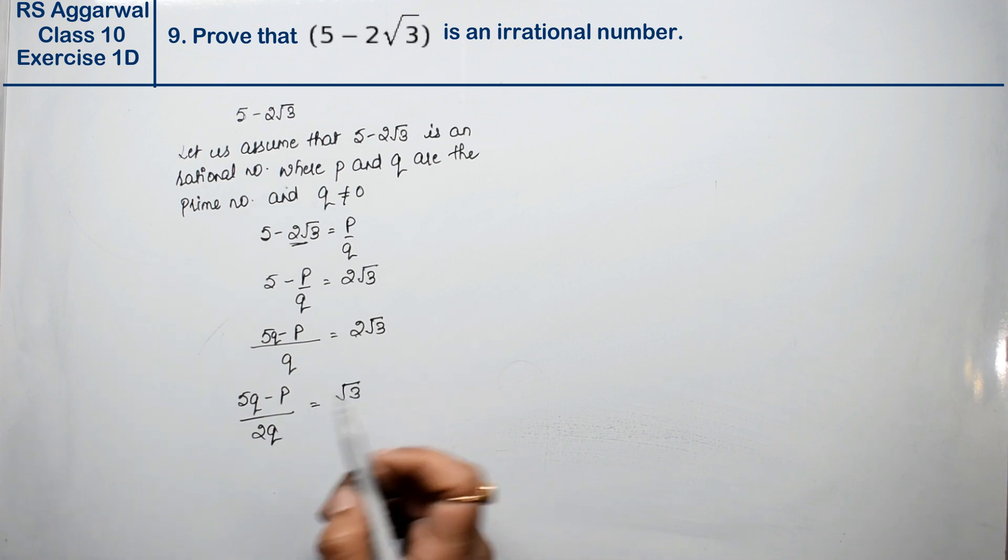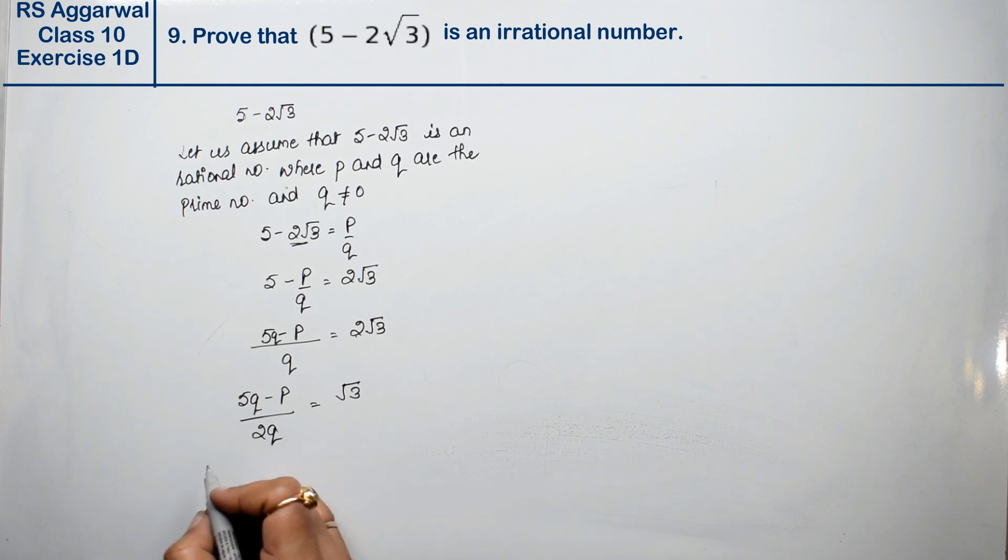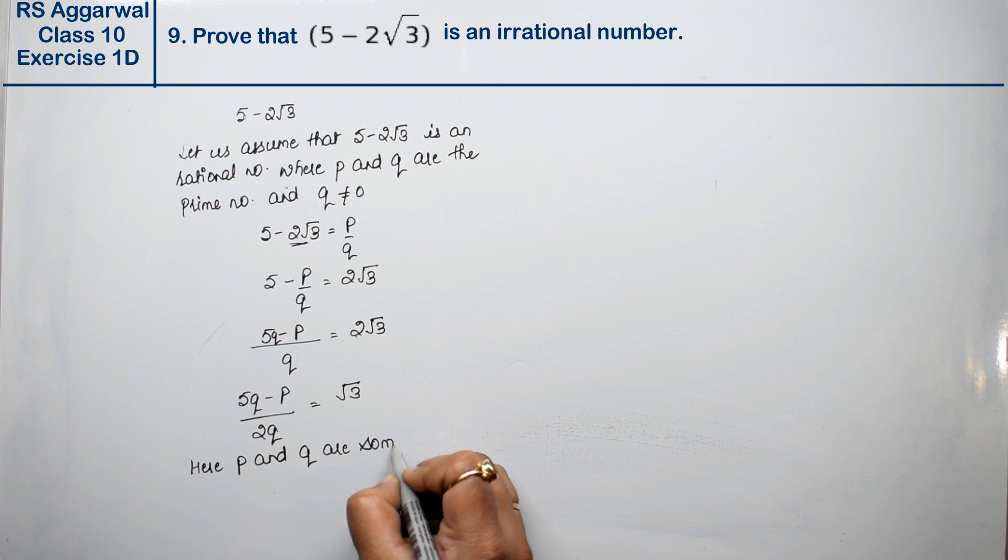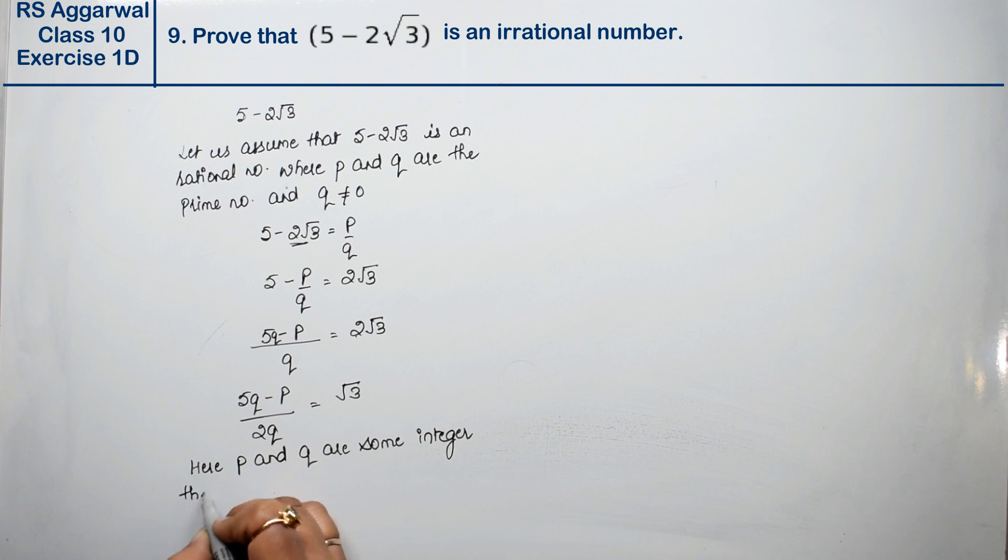Now we know that P and Q are prime numbers. Since P and Q are some integers, some numbers, then 5Q minus P upon 2Q is rational, a rational number.